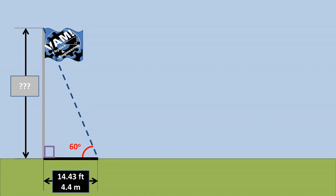The length of the shadow is 14.43 feet, and the angle to the top of the flagpole from the end of the shadow is 60 degrees.